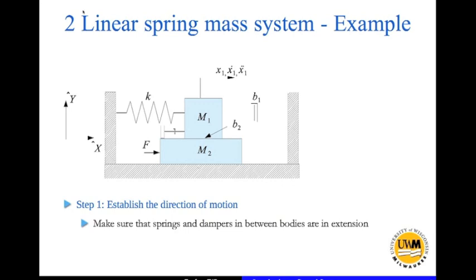I'm assuming that mass M1 moves in the positive x direction, so x1, x1 dot, and x1 double dot are in the positive x direction. Now for the damper to be in extension, this end has to move faster than the other end — i.e., the velocity of this end has to be greater than the velocity of that end. I'm also assuming that M2 moves in the positive x direction with x2, x2 double dot, and x2 dot being in the positive x direction. So for this end to move faster, I need x1 dot greater than x2 dot.